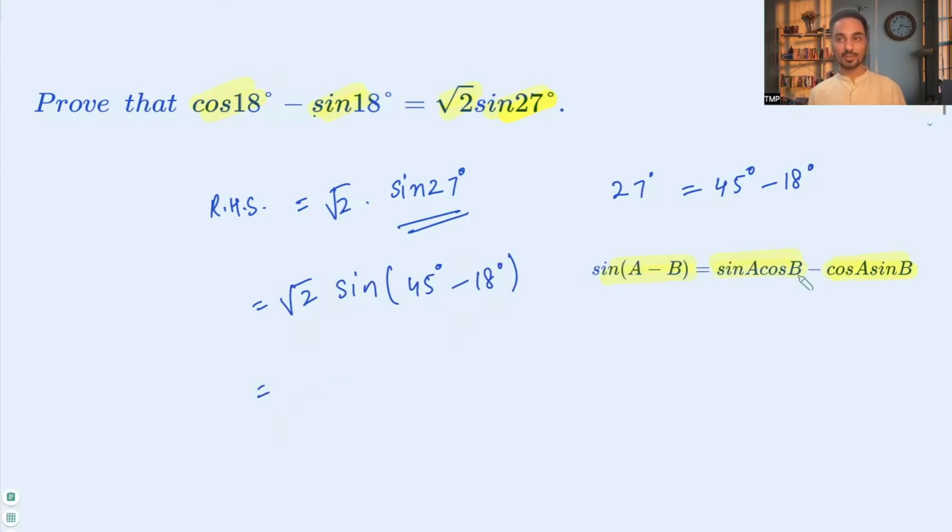So we can write square root 2 times sin 45 degrees times cos 18 degrees minus cos 45 degrees times sin 18 degrees.